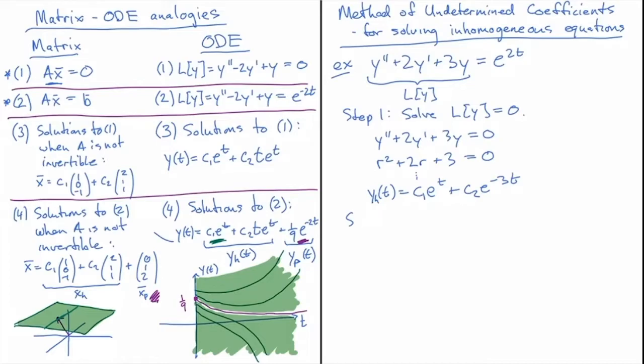And now step two. This is the step that can get fairly complicated depending on what that right-hand side is and how it relates to the solution to the homogeneous equation. But this one is straightforward, and I'll do some of those more complicated ones in a subsequent video.